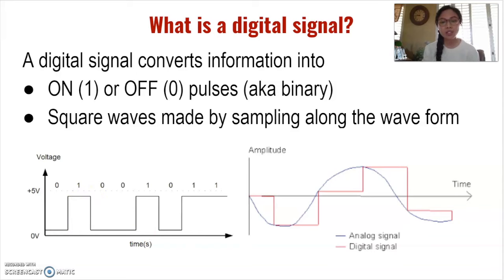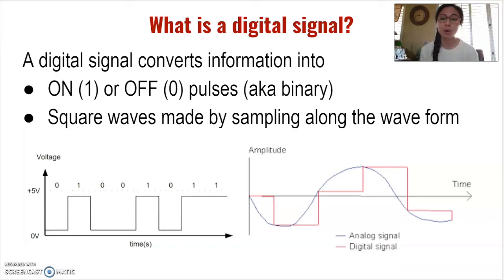Because these values are clear-cut, they are less prone to interference and more replicable than analog waves, as they do not need to replicate every single part of the wave perfectly — they just need to know if a signal is on or off.